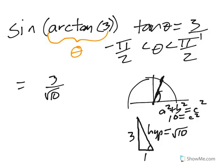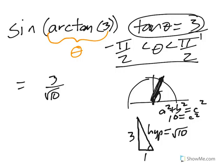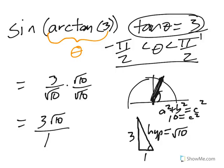We just need to confirm the sign and rationalize if needed. Since the tangent is positive and the angle is between negative pi halves and pi halves, we're in the first quadrant, so sine is also positive. Rationalizing gives the final answer, and we move on to the next problem.